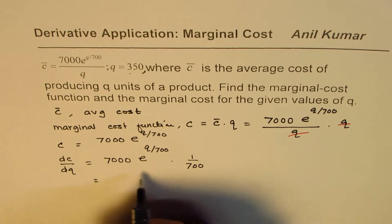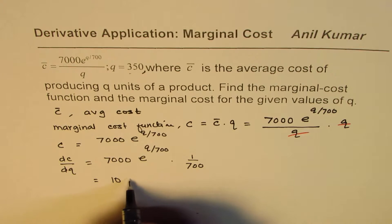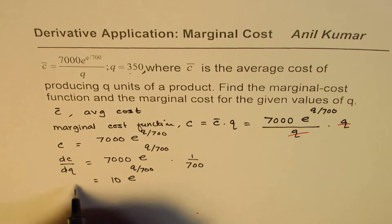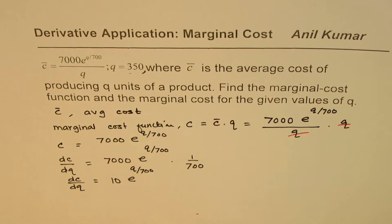This equals 10e^(q/700). So dc/dq = 10e^(q/700), which is the marginal cost.